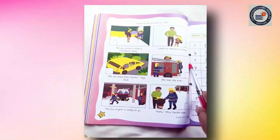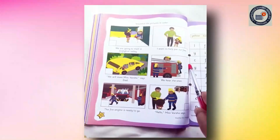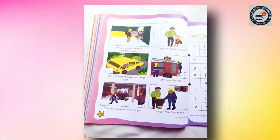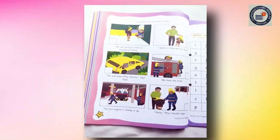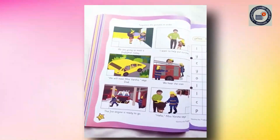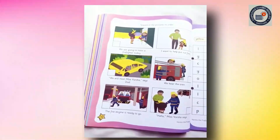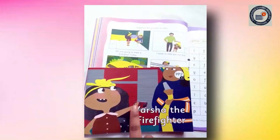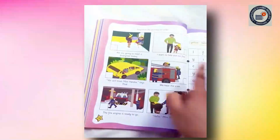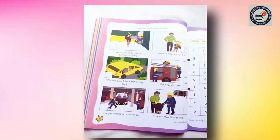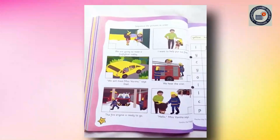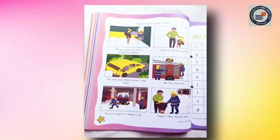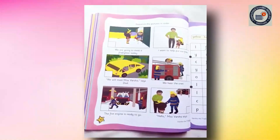Do you see there is a sentence from the story? Do you think these pictures are in the correct order, just like we show in the story book? Are they in the correct order? Can you put them in the correct order? They are not in the correct order. So, can you put them in the right order?